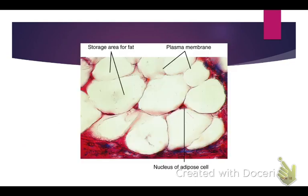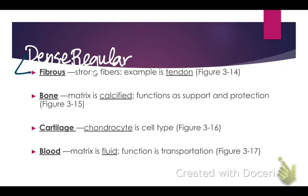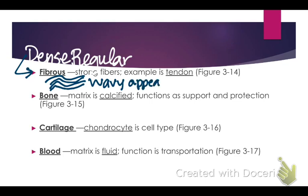Now let's talk about fibrous connective tissue. The type we're going to look at is called dense regular connective tissue. The reason it's called dense regular is that the fibers run parallel to each other, it has a wavy appearance, and the fibers are all packed really closely together.